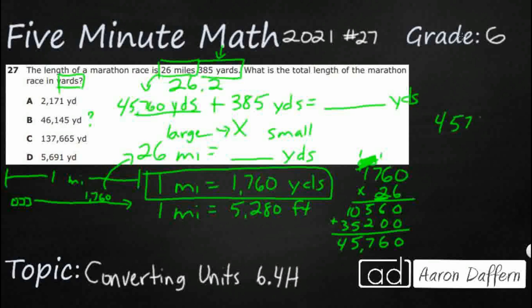45,760 plus 385. That's going to get you 5, 14, 10 that's 11, 5 and 1 is 6. 46,145. And our answer is B.